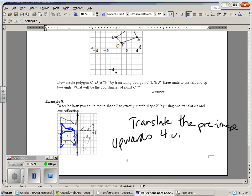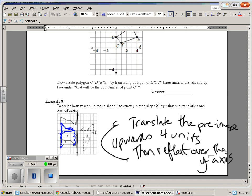So you could translate the pre-image upwards 4 units, then reflect over the y-axis. The other option is reflect it over the y-axis first, and then translate it 4 units upwards second. And that's your notes on reflections.